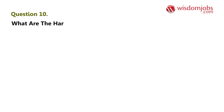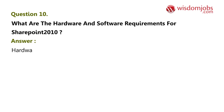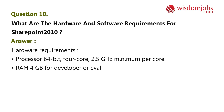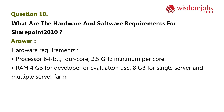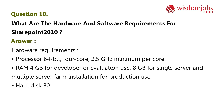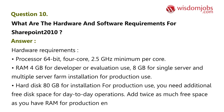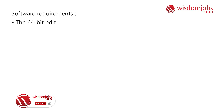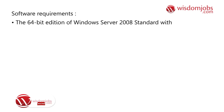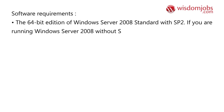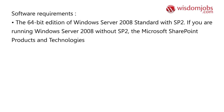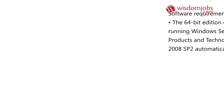Question 10: What are the hardware and software requirements for SharePoint 2010? Answer: Hardware requirements — Processor: 64-bit, 4-core, 2.5 GHz minimum per core. RAM: 4 GB for developer or evaluation use; 8 GB for single server and multiple server farm installation for production use. Hard disk: 80 GB for installation; for production use, add twice as much free space as you have RAM. Software requirements: the 64-bit edition of Windows Server 2008 Standard with SP2. If running without SP2, the Microsoft SharePoint Products and Technologies 2010 preparation tool installs Windows Server 2008 SP2 automatically.